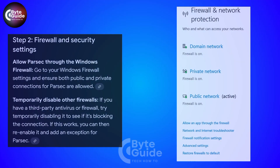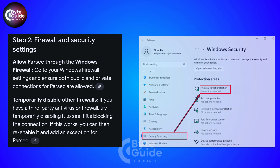Another fix is to check your firewall and security settings. Go to your Windows Firewall settings and make sure Parsec is allowed on both public and private networks. If you are using antivirus or a third-party firewall, try disabling it temporarily to test if it's blocking Parsec. If that fixes the issue, re-enable it and add Parsec as an exception.